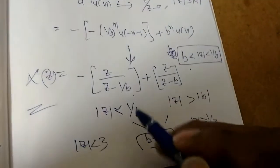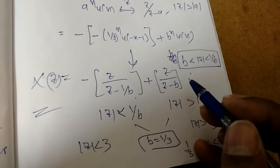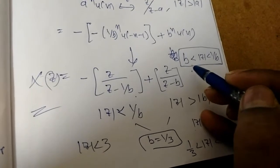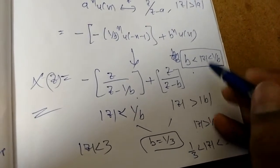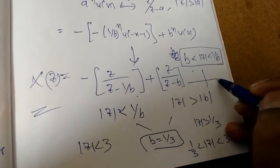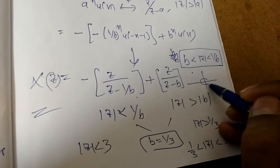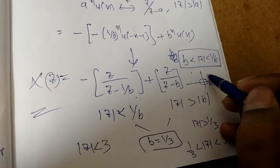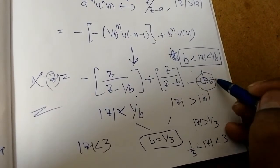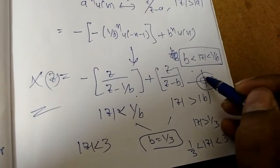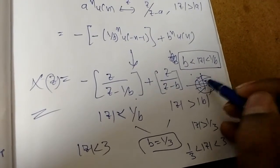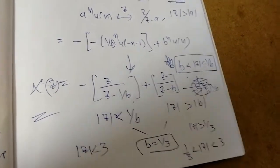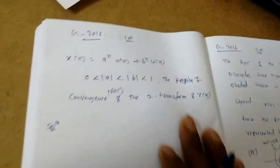Whenever there is a two-sided sequence, we get a strip-shaped ROC like this. Suppose this is b and this is 1 by b — the common ROC is the annular region in between these two. Now we will see the GATE problem which came in GATE 2016.